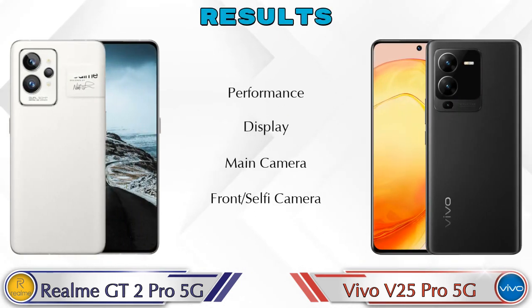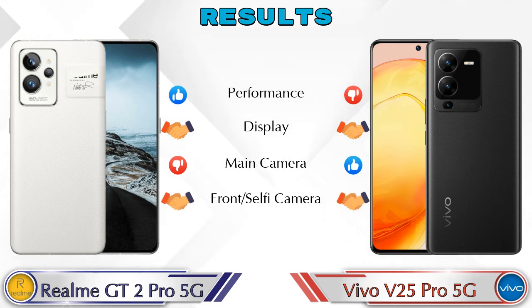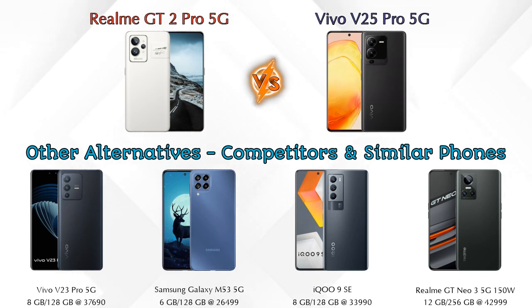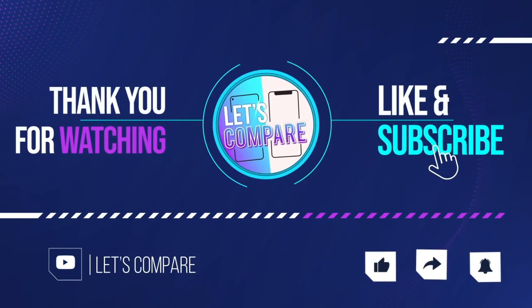In the final results: the GT2 Pro leads in performance, both phones are equal in display, and the V25 Pro 5G is ahead in the main camera. Both are equal in front selfie camera. Other competitors at the same price include the Vivo V23 Pro 5G, Samsung Galaxy M53 5G, iQOO 9 SE 5G, and Realme GT Neo 3 5G 150W. Details about these competitor phones are available in the description. Please like and subscribe — thanks for watching!